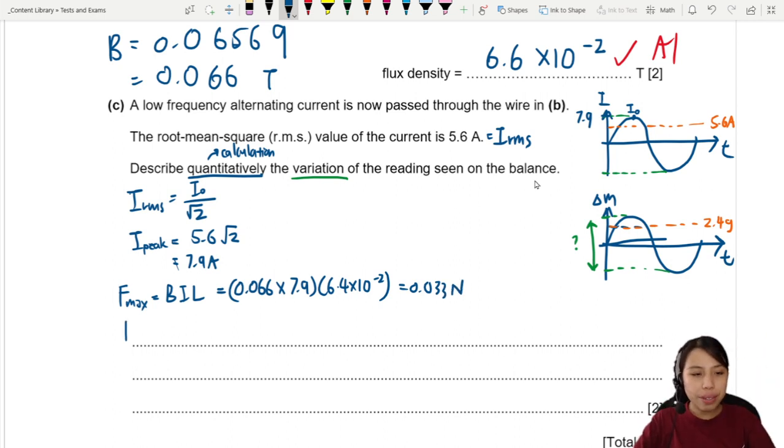Of course, one more step is if you take F equals to mg you know, find the mass, right? Reading is in mass. So then you will get that mass here you divide by 9.81 mass will be 3.4 times 10 to the negative 3 kg. Also known as 3.4 grams.